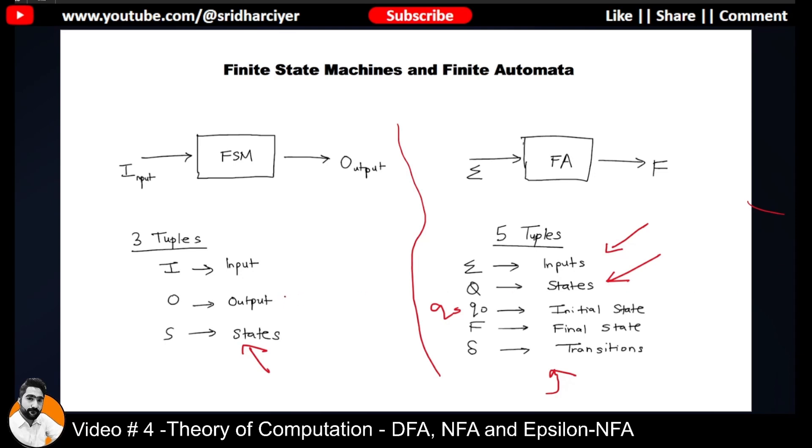Whereas in the case of outputs, FSM only consists of O as the output. It will only give you what is the current output of that particular state, but it does not give you the idea of the transitions. That is where these three tuples come into picture. These three combined will give you a particular output. So again, you can say that FSM and FA are equivalent, but FA is more powerful as compared to an FSM.